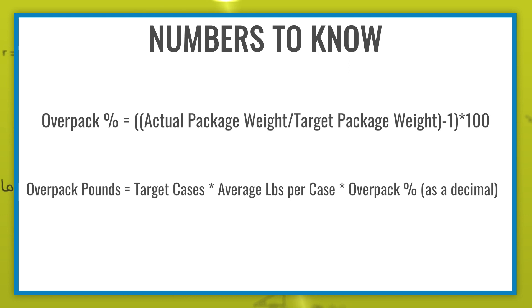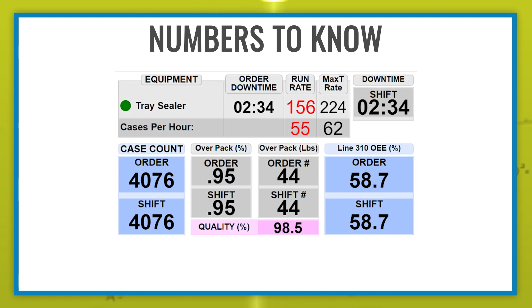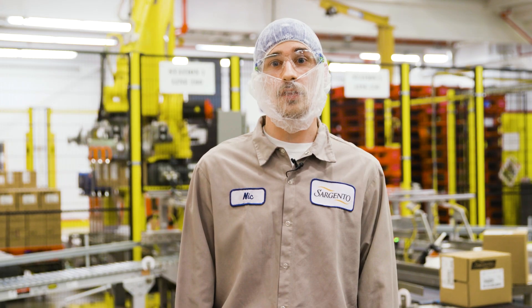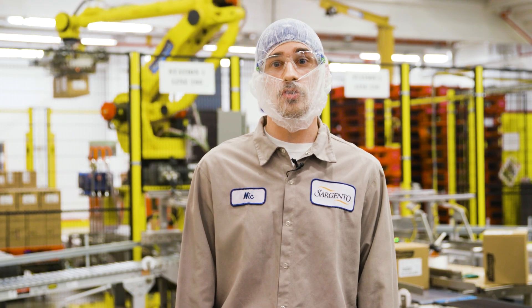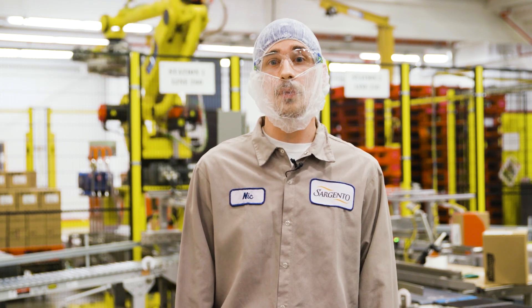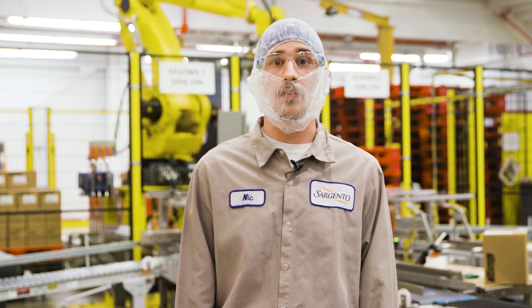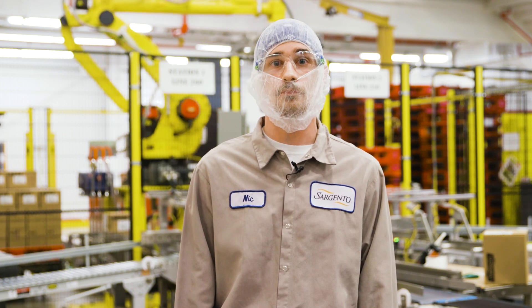From the digital display, we see that the line was averaging 0.95% Overpack for the current production order. The average case weighs two pounds. If the production order was set to produce 6,000 cases, how many pounds of Overpack would occur if the line continued to produce at the current Overpack rate?